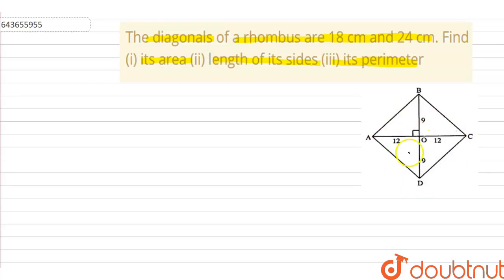Therefore, angle AOB, BOC, COD, and AOD all are 90 degrees. Let's start the solution. ABCD is a rhombus.